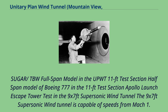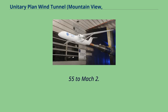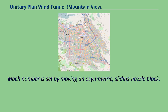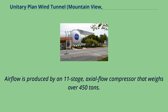The 9x7-foot supersonic wind tunnel is capable of speeds from Mach 1.55 to Mach 2.5. Mach number is set by moving an asymmetric sliding nozzle block. Airflow is produced by an 11-stage axial flow compressor that weighs over 450 tons.